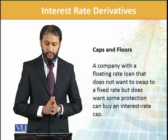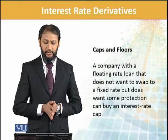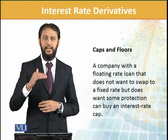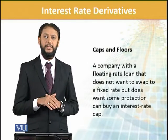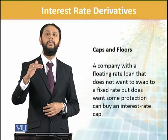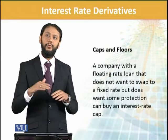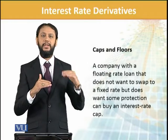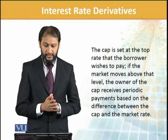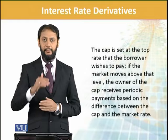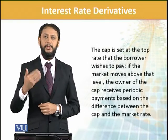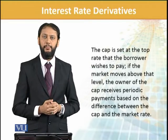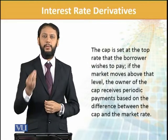Then caps and floors — a company with a floating rate loan that does not want to swap to fixed, does not want to fix it, but does want some protection — wants to safeguard itself somewhat. What it does is it buys an interest rate cap. My loan remains floating but I take a certain cap so that it doesn't go too far above that level. That is buying caps. The cap is set at the top rate — the maximum you will pay. So if it goes above that level, you pay higher but you get compensation from the cap you have purchased.